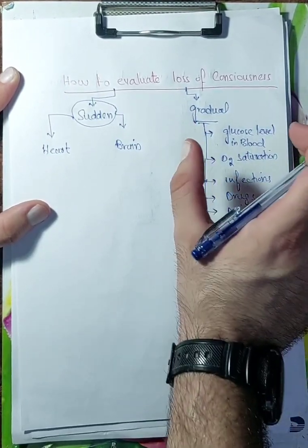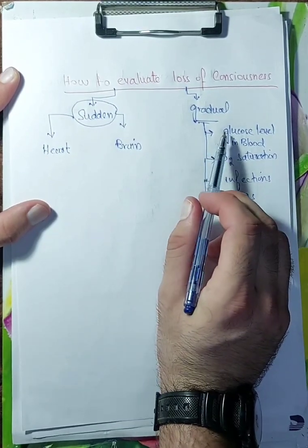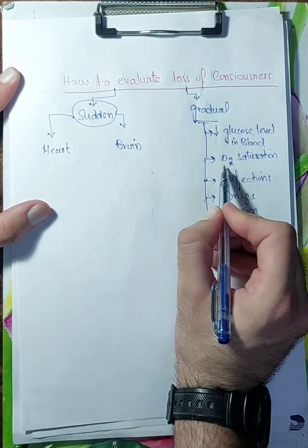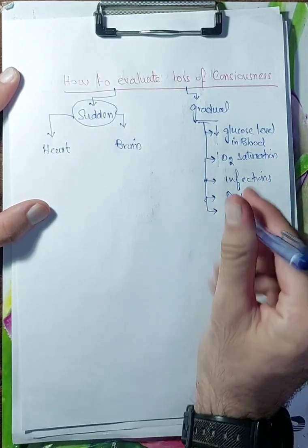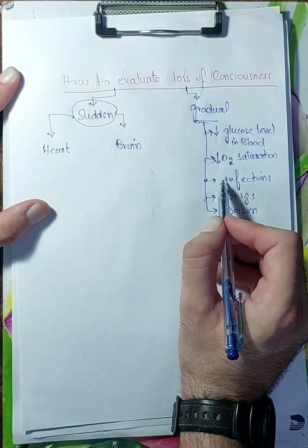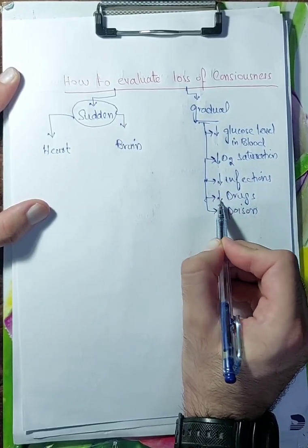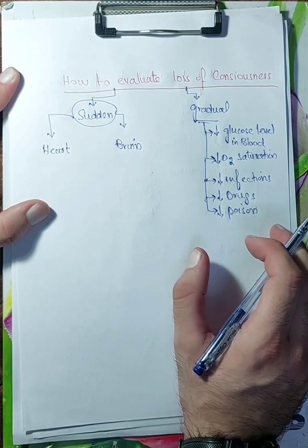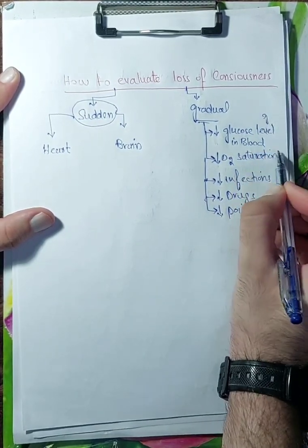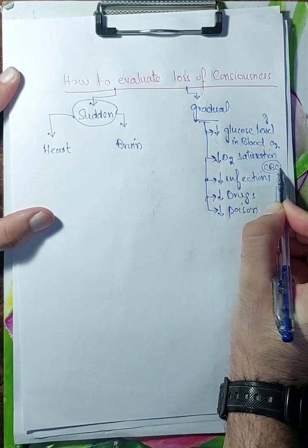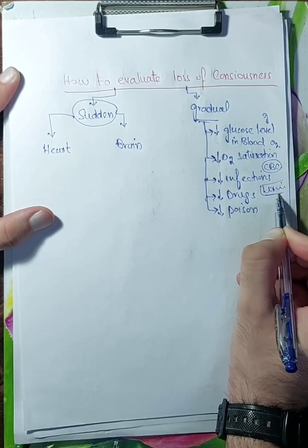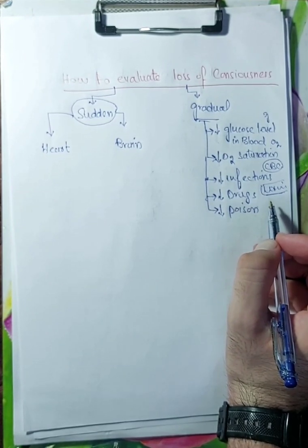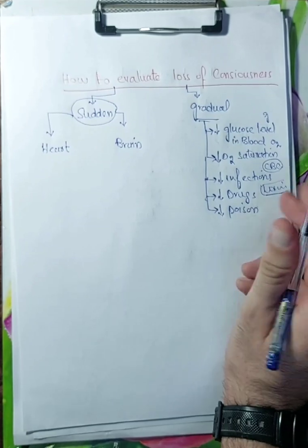These are the things which will lead to gradual onset of loss of consciousness. Like if the glucose level in the blood is low, he will lose his consciousness level slowly. If oxygen supply is low, he will lose consciousness slowly. If there is infection, if he takes drugs, if he takes poison, these things will lead to loss of consciousness gradually. You will check glucose level, oxygen saturation, CBC to rule out infection, urine for drug metabolism, and take history if he has taken any poison. This was gradual onset.